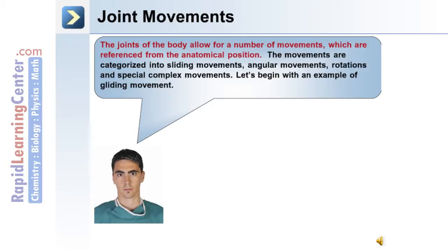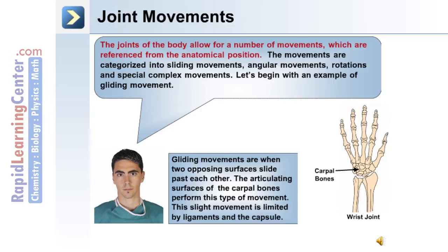Let's begin with an example of a gliding movement. Gliding movements are when two opposite surfaces slide past each other. The articulating surfaces of the carpal bones, for example, perform this type of movement. This slight movement is limited by ligaments and the capsule.